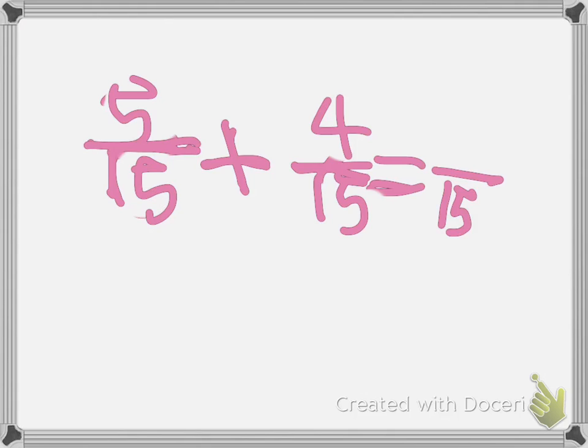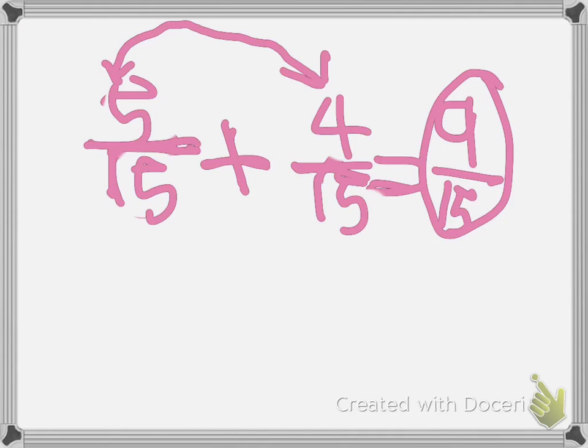So now we have to add these two numbers. Right here, you have to add these two numbers. So five plus four equals nine. All right, now our fraction is nine over fifteen.